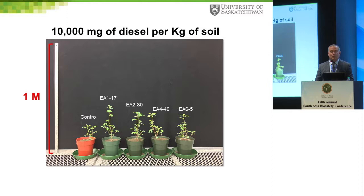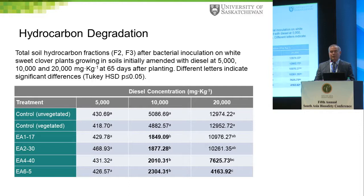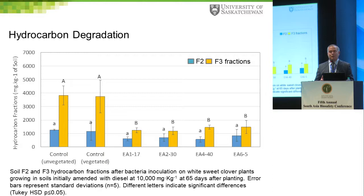At 10,000 ppm diesel the plants don't do very well, but the inoculated plants are doing much better than the un-inoculated control. Analyzing the soil for what's happening to the F2 and F3 fractions: at 5,000 ppm there's no significant degradation, but at 10,000 and 20,000 ppm you find significant differences in the total amount of diesel. Breaking it down by fraction, the isolates are significantly degrading the F3 fraction — that's why we're seeing the change in hydrocarbons. The bacteria are helping the clover plants degrade that particular hydrocarbon fraction.